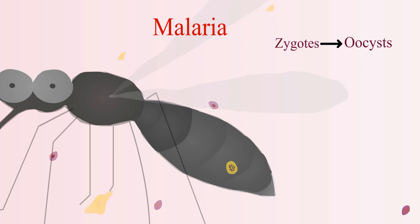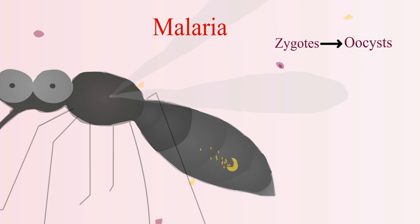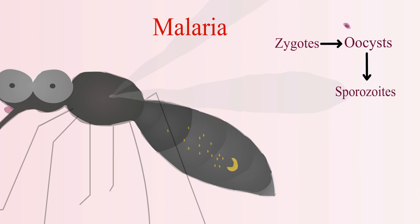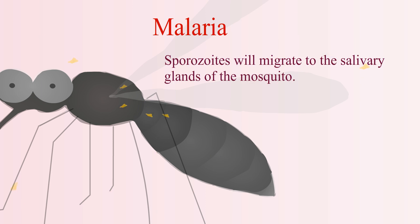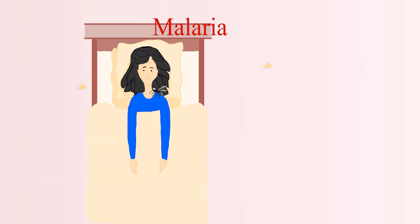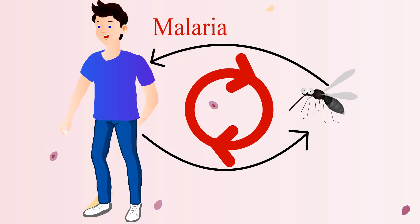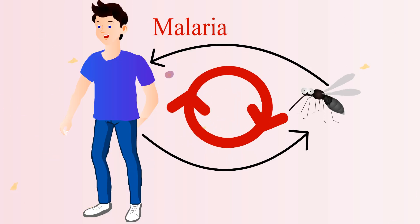After 10 to 18 days, the oocysts will mature and release the sporozoites, which will migrate to the salivary glands of the mosquito. This sporozoite is injected into another human host when the mosquito bites and passes its saliva to them. This cycle will then continue to spread malaria.